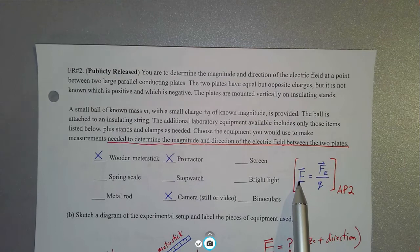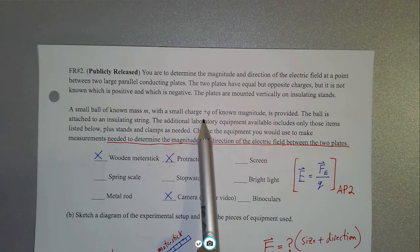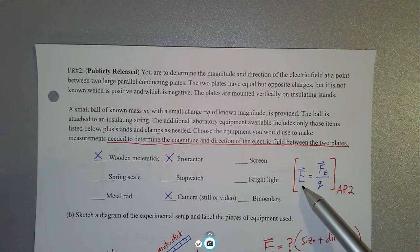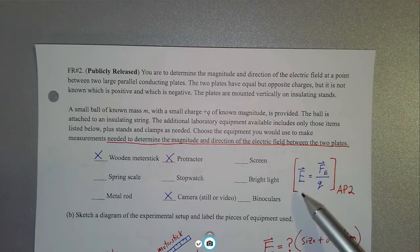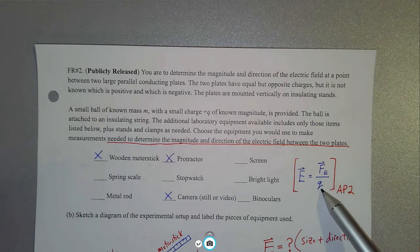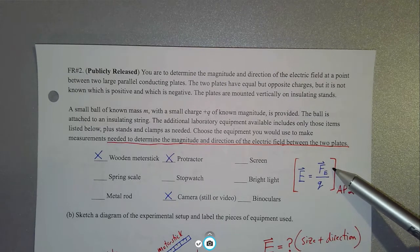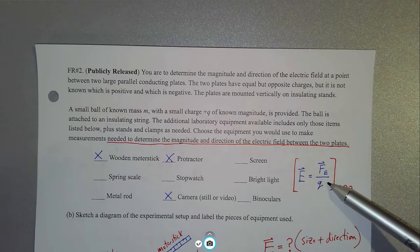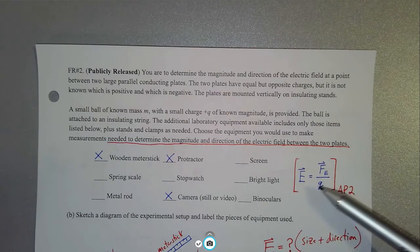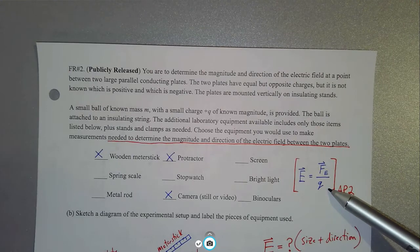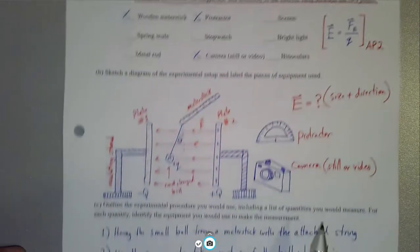Between two parallel plates or capacitor plates, the strength of the electric field is uniform or constant. So no matter where you place that little positive charge Q, it's going to feel the same size electric force. The equation for the strength of the electric field: if you take a test charge of known charge Q and measure the size of the electric force on it, you divide force in newtons by charge in coulombs to get the electric field in newtons per coulomb — or equivalently, volts per meter.